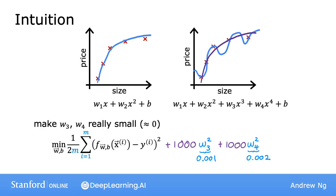So when you minimize this function, you'll end up with w3 close to 0 and w4 close to 0, effectively canceling out the effect of the features x cubed and x to the fourth. If we do that, we end up with a fit to the data that's much closer to the quadratic function, including maybe just tiny contributions from those higher-order features.